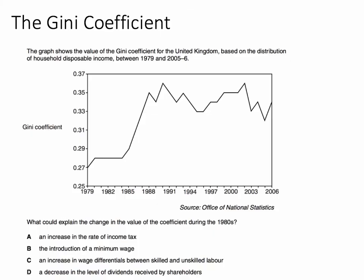The graph shows the value of the Gini coefficient for the UK based on the distribution of household disposable income between 1979 and 2005-2006. The question is: what could explain the change in the value of the Gini coefficient during the 1980s?